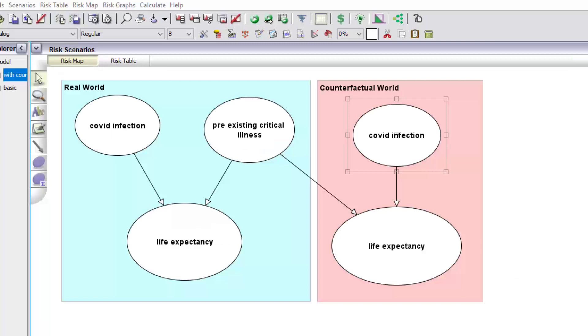So the counterfactual model required is this one. So Covid infection and life expectancy in the counterfactual world are simply copies of the same name nodes from the real world.